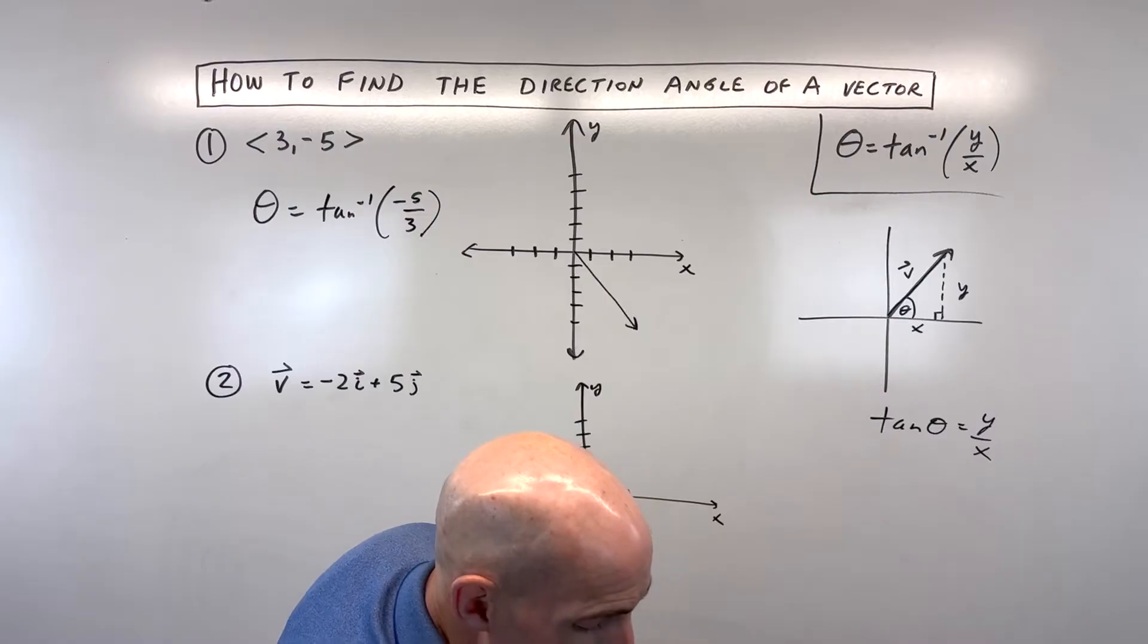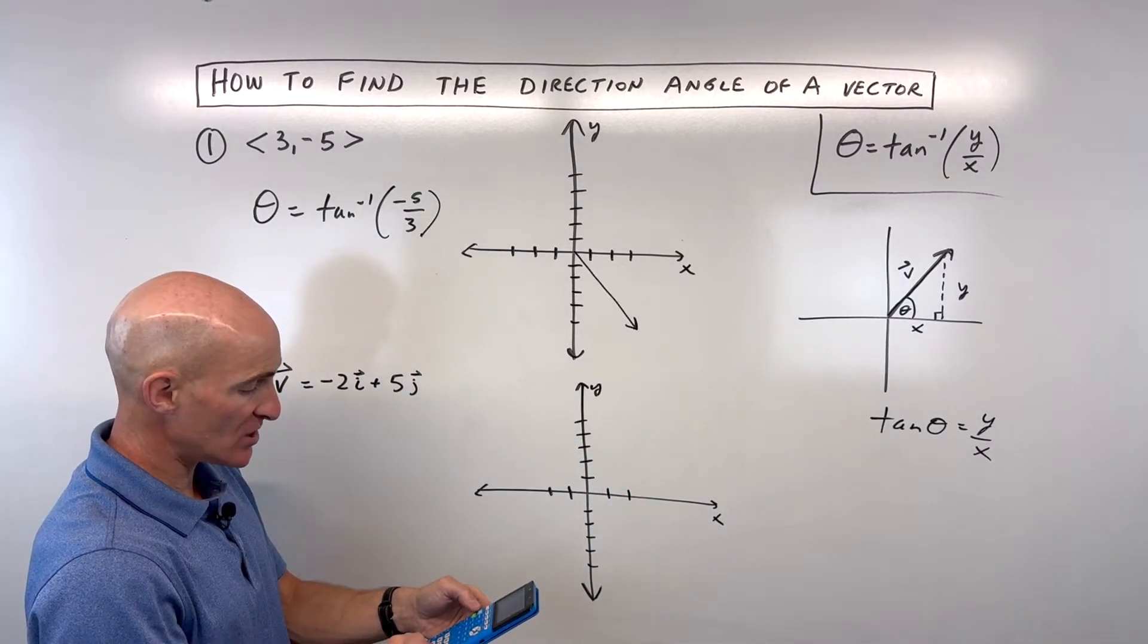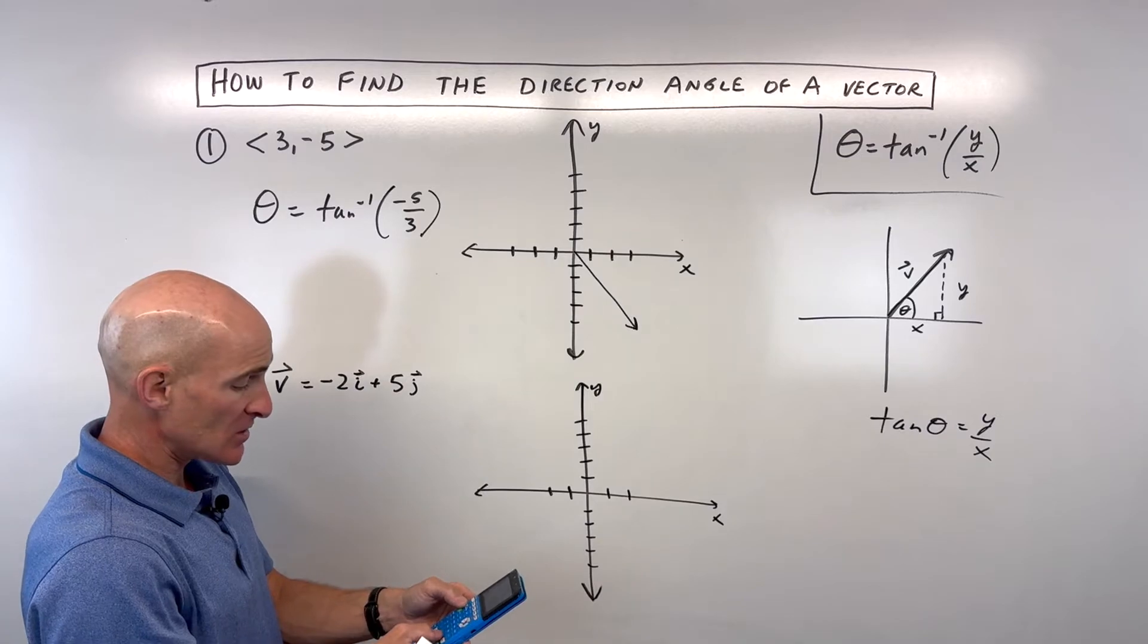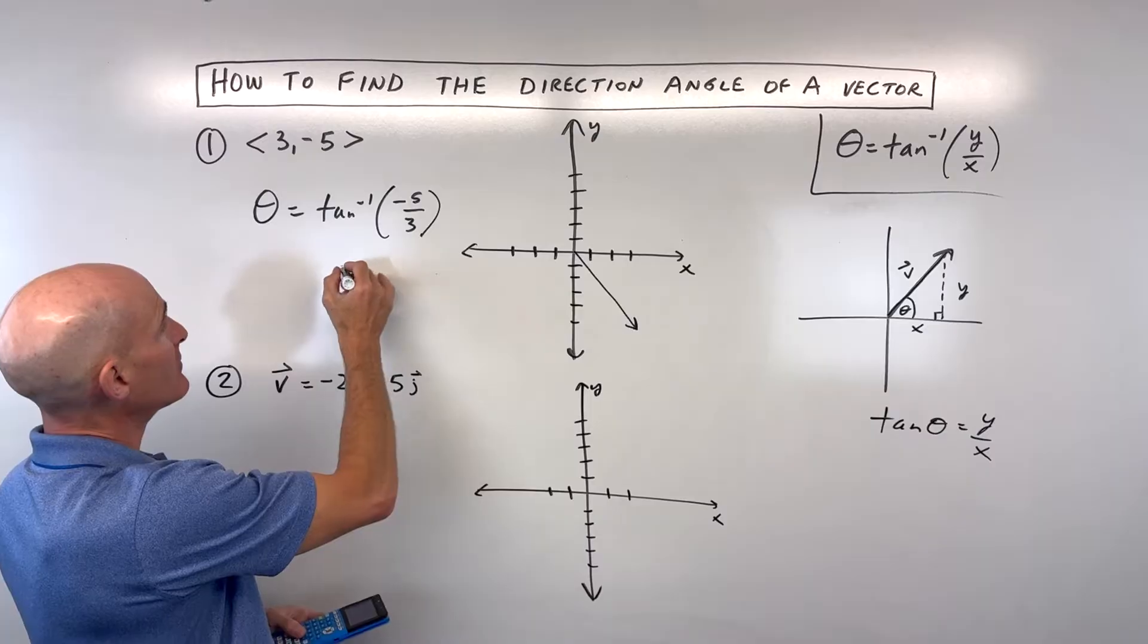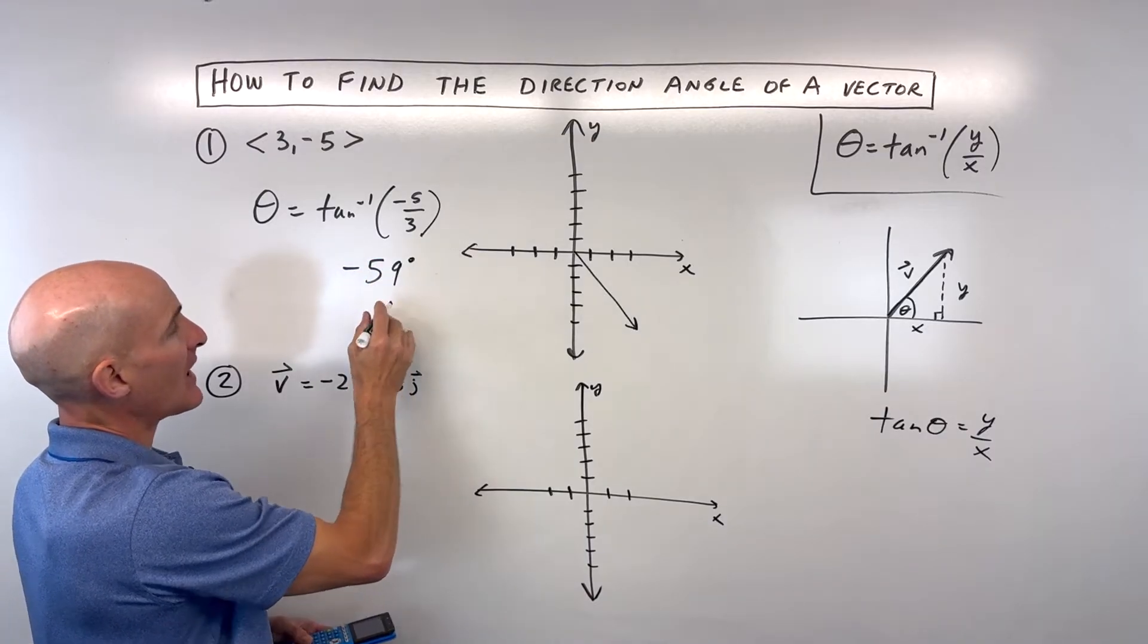Going to our calculator now, make sure your calculator is in degrees. Go to the mode, change it to degrees if it's in radians. So tangent inverse of negative 5 divided by 3 is giving me an angle of, I'm just going to round a little bit, negative 59 degrees.